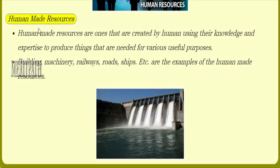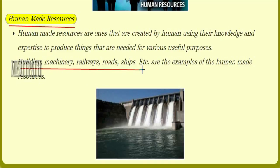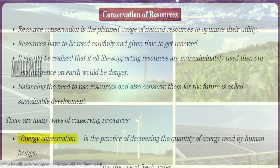Human-made resources are resources made by humans. Though the raw materials are acquired from nature, humans modify and manufacture things for further use — examples include buildings, machinery, railways, roads, and ships. A dam is a good example: the major component is water, a natural resource, but the construction is done by humans, making it a human-made resource.